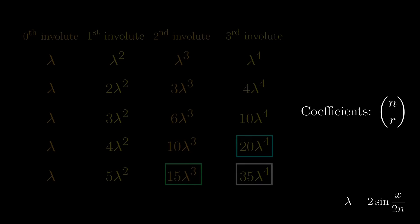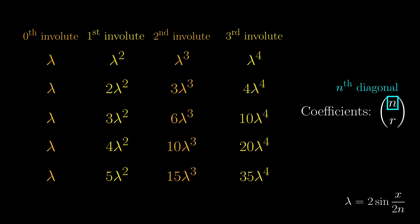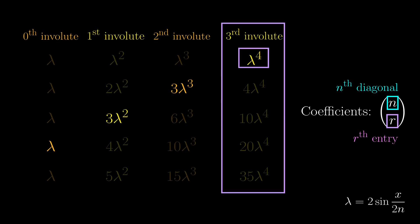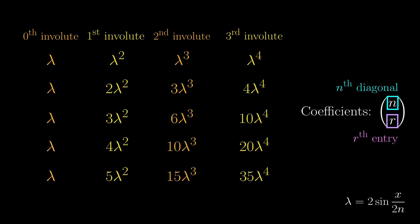We know that the Pascal's triangle has n choose r as the entries. Here, n refers to which diagonal we are on, but we count from 0. So this is the 0th diagonal, this is the first diagonal, this is the 2nd diagonal, and so on. The r in this case refers to which entry on the diagonal, again counting from 0. So this is the 0th entry, the 1st entry, the 2nd entry, and the 3rd one. Or you can think of it as being in the 3rd involute column, so it is the 3rd entry.